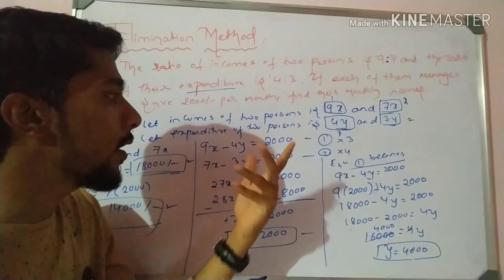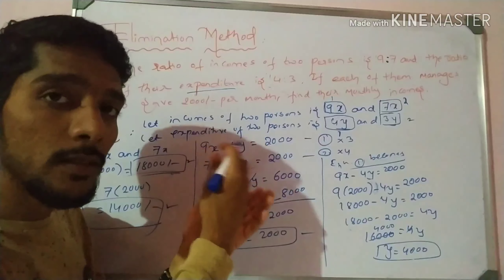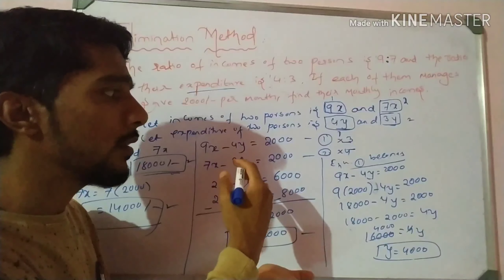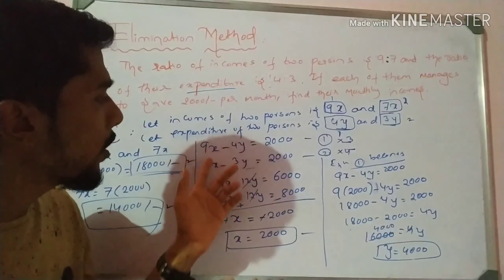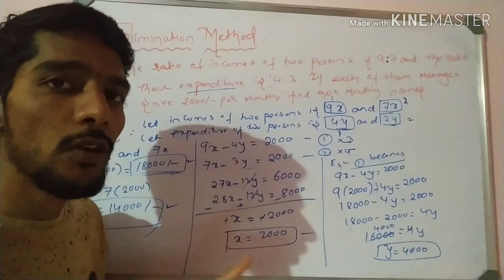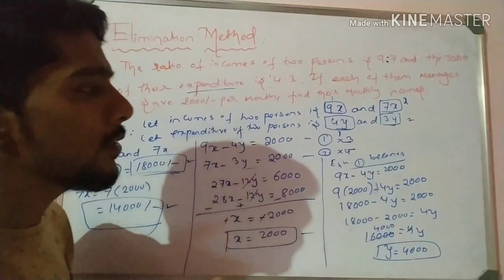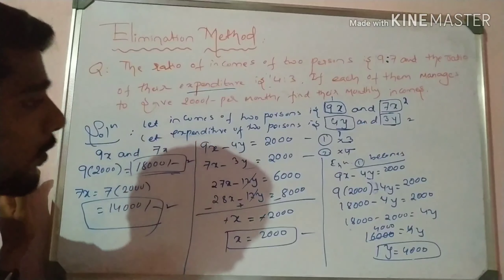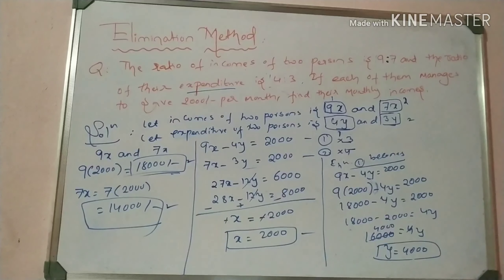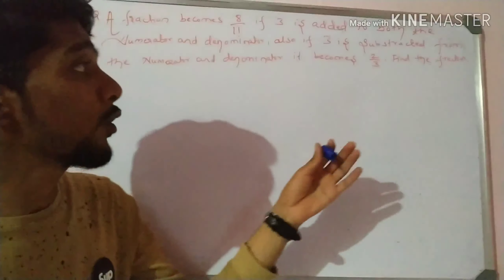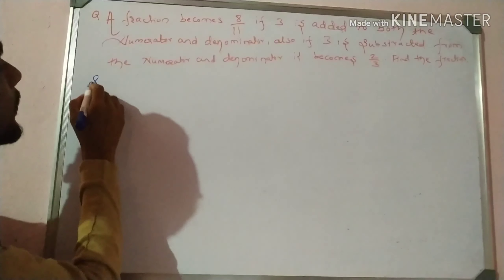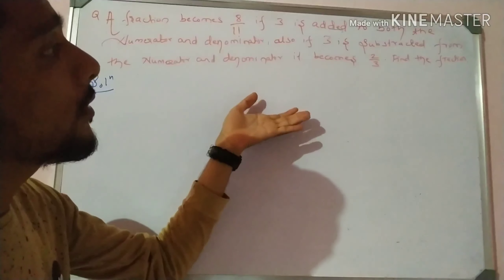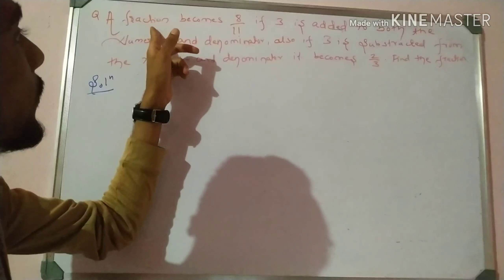Now find their monthly income. Their incomes are in the ratio 9x and 7x. The first person's income is 9 into 2,000 equals 18,000 rupees. The second person's income is 7 into 2,000 equals 14,000 rupees. That is the required answer. If they ask for expenditure, we can take 4y and 3y and put the value of y there.